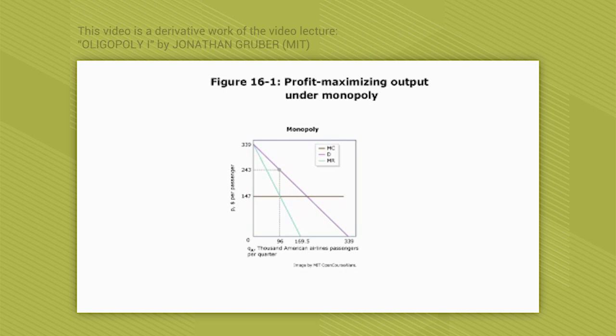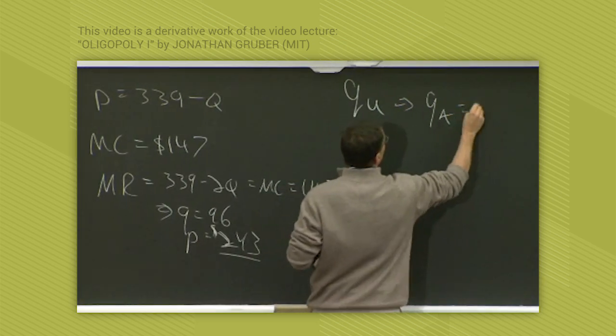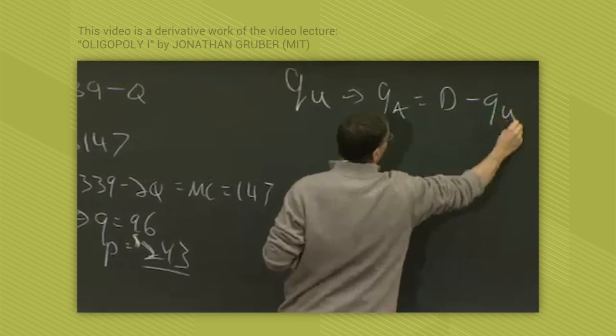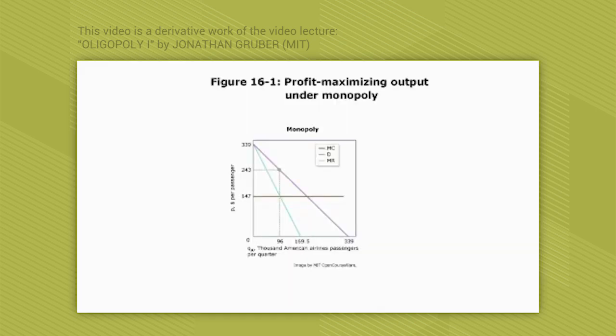So the residual demand for American is Q sub A equals total demand minus Q sub U. That's their residual demand. For example, let's say that American just guesses that United will fly 64,000 passengers. Let's say American says, look, I just know,